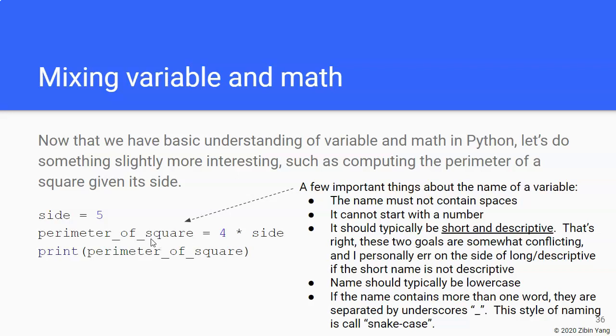Because we want the code to be readable. So if you have to make a choice, then I would do perimeter_of_a_square.